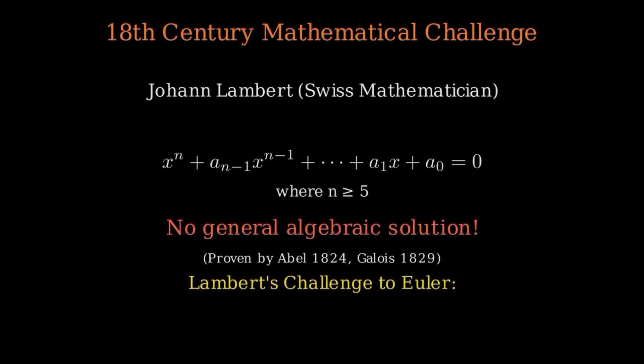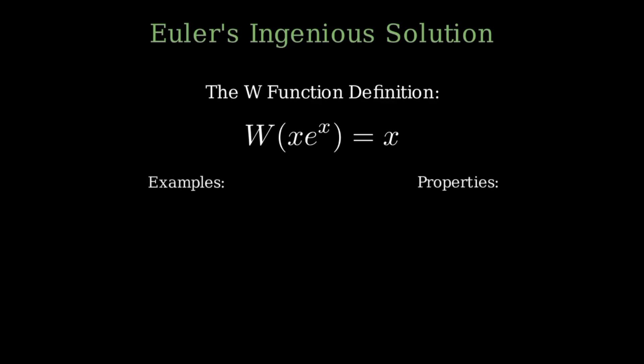Euler's response was nothing short of brilliant. Instead of trying to solve the unsolvable, he created something entirely new. He introduced what we now call the W function, defined by this deceptively simple equation: W of x times e to the x equals x. At first glance, this might look circular or even trivial. But look closer at what Euler accomplished here.